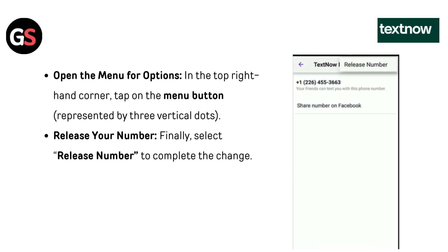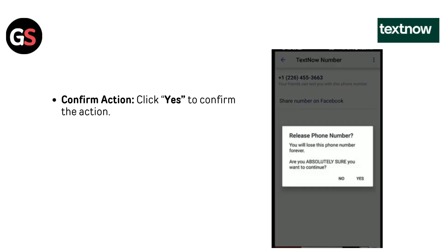Open the menu for options in the top right hand corner. Tap on the menu button represented by three vertical dots. Finally, select Release number to complete the change.